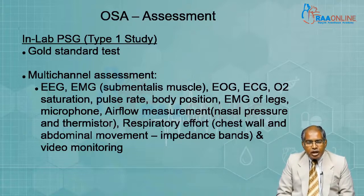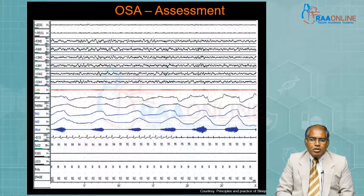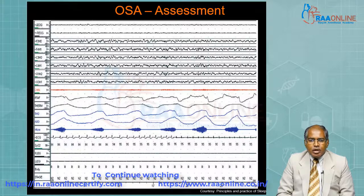We can also look for thoracoabdominal paradoxical movement. The polysomnogram includes video monitoring, and if looking for sleep-related hypoventilation, transcutaneous or end-tidal carbon dioxide levels can be measured as well. This is the information we obtain from a polysomnogram, and it needs to be scored for respiratory events.